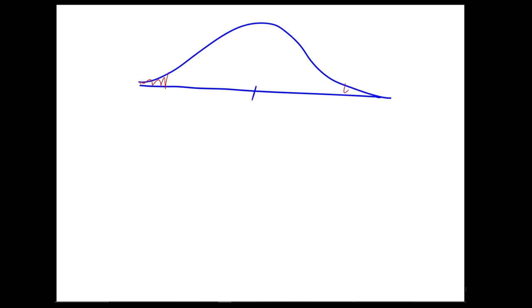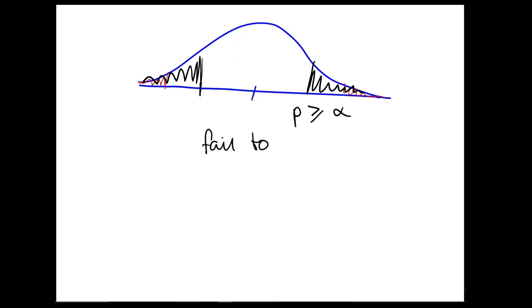If instead we observe something not in the region of rejection — something closer to the center — the p-value will be bigger than alpha, so we would not reject the null hypothesis. In this case it is not sufficiently unlikely what we observed if the null hypothesis is true, so we fail to reject the null hypothesis and the result is not statistically significant. This is where we get a significant versus a non-significant — or insignificant — result, which is the origin of the stupid joke that's the title of this podcast.